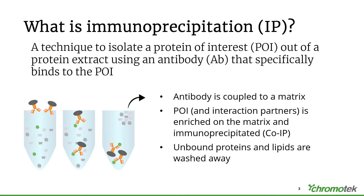What is an immunoprecipitation, or IP? In an immunoprecipitation, you are able to isolate a protein of interest out of a complex protein extract by using an antibody that specifically binds to the protein of interest. The antibody, shown here in orange, is coupled to a matrix — the grey spheres. Your protein of interest, shown as the green spots in your complex protein mixture, is bound by the antibody and can therefore be precipitated out of this complex mixture.